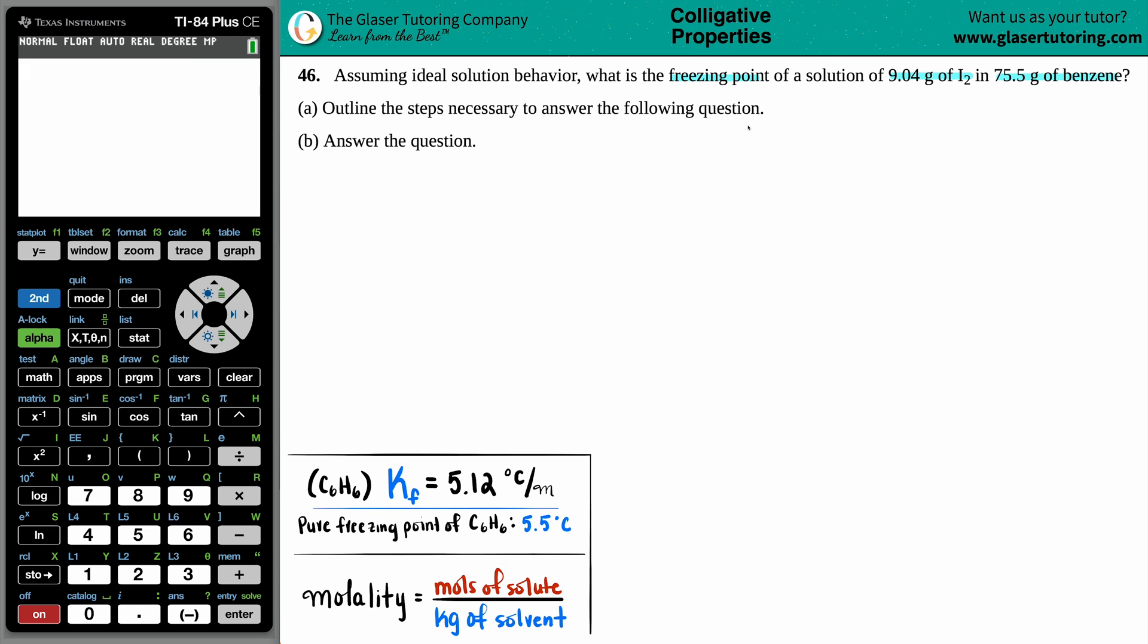Well, just know that the solute is always the smaller amount that is being dunked into the solvent. The solvent is generally your liquid component and it's generally going to be more amount. So in this case, by the wording, they said that we had 9.04 grams of I2 that was in the 75 grams of benzene. The solute always goes in the solvent. So I2 has to be the solute and the benzene has to be the solvent.